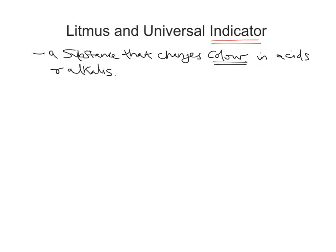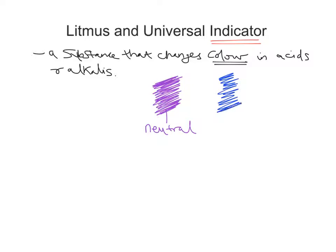That's certainly the case for litmus. Litmus indicator is red in acids and blue in alkalis. On a little scale here: litmus in a neutral solution has a purple colour, so when a substance has a neutral nature to it, litmus will go purple. If there is an alkali present, litmus will turn blue.